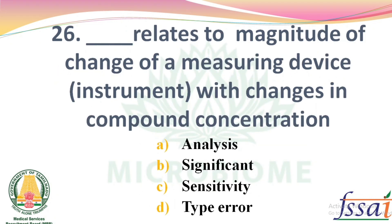Dash relates to magnitude of change of a measuring device with changes in compound concentration. Options: Analysis, Significant, Sensitivity, Type Error. The right answer: Option C, Sensitivity.